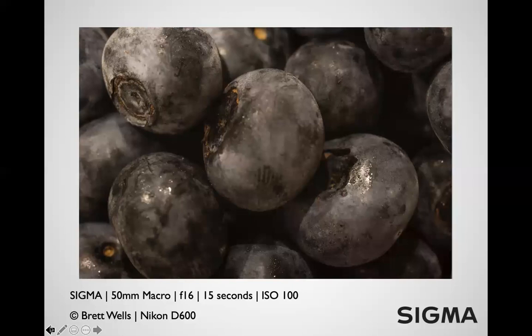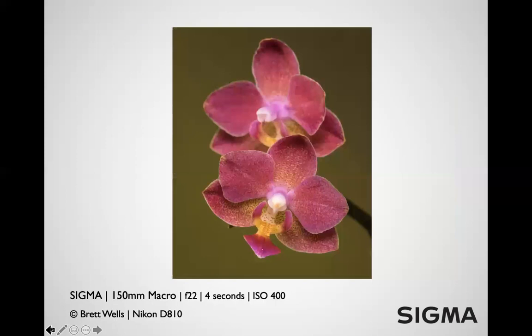This is with our 50mm at just about one-to-one, full reproduction. You can see at f16 I've only got about a blueberry's worth in focus. This orchid is a constructed image — it's a real orchid I bought at the grocery store, but the background and light are artificial.